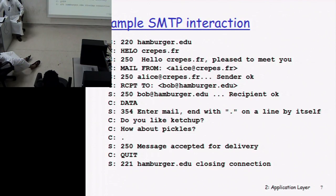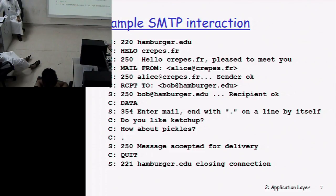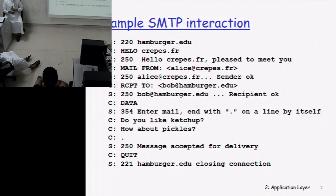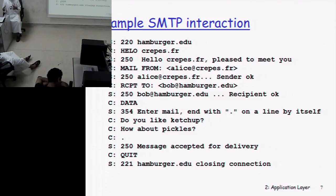Nowadays this task is done by a GUI interface software like Outlook Express, so you don't need to give each command step by step. This difficult command-by-command process was how people sent emails when mail service first started. Later, it was simplified by designing mail clients, user agents, mail readers, mail composers — such as Outlook Express, Fedora, Thunderbird, and Elm — to make the task of transferring mails between users much easier.